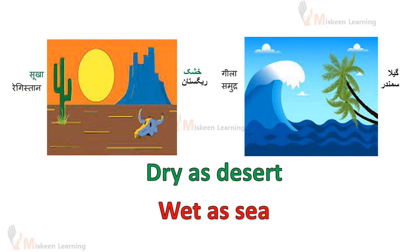Dry as a desert — regestan ki tira, suha. Wet as sea — samandar ki tira, gila. Yahaan per comparison ho raha hai moisture ka — we are comparing wetness and dryness here.